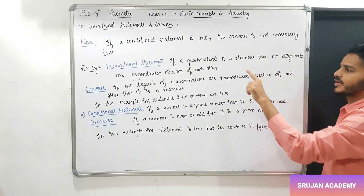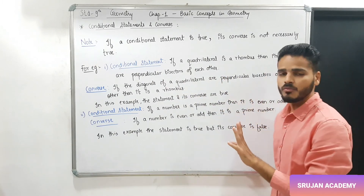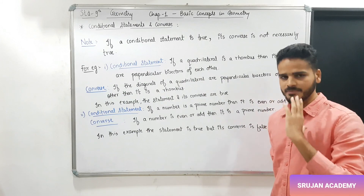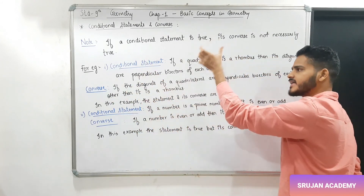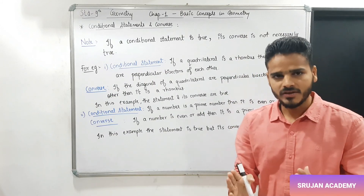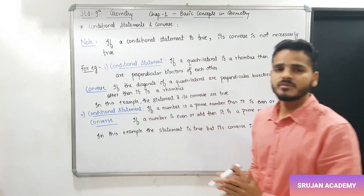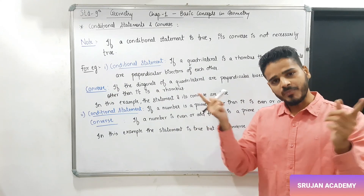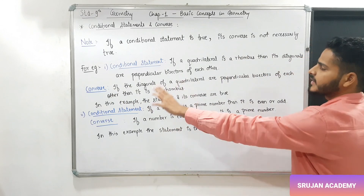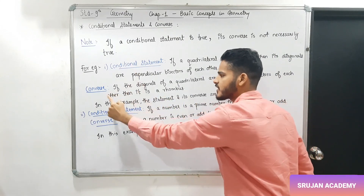Same rhombus example लेते हैं. If a quadrilateral is a rhombus, then its diagonals are perpendicular bisectors of each other. और इसका converse: if the diagonals of a quadrilateral are perpendicular bisectors of each other, then it is a rhombus. इस example में conditional भी true है और converse भी true है. यह rhombus के diagonals की property है — यह true है. यदि diagonals perpendicular bisectors of each other हों तो obviously it is a rhombus. So यहाँ पर conditional और converse दोनों true हैं.